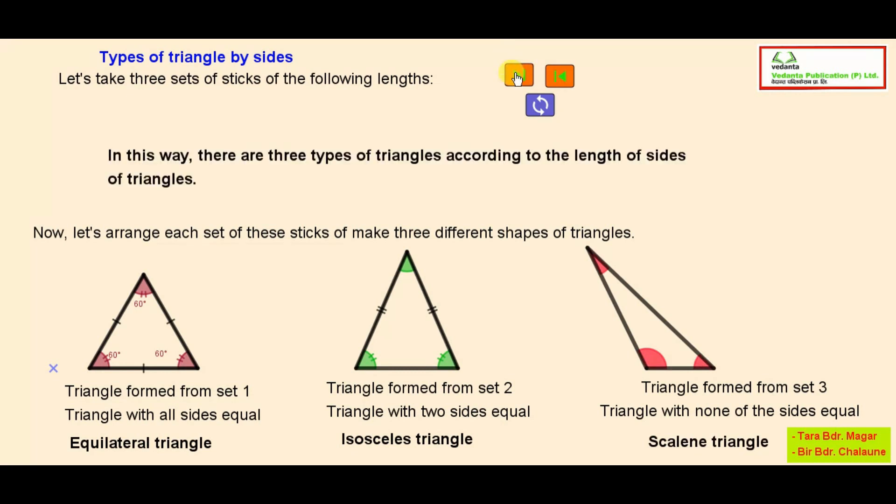In this way, there are three types of triangles according to the length of sides of triangles.